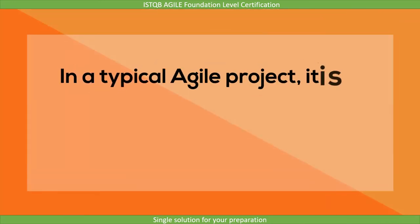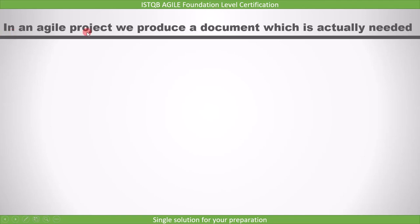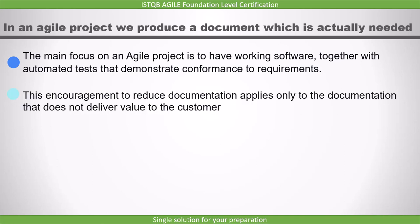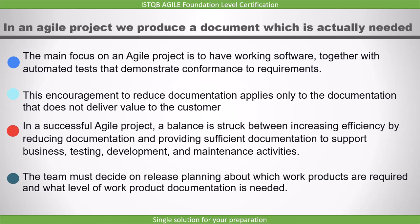Regarding documentation, the most important point is that in a typical agile project, it is common practice to avoid producing vast amounts of documentation. In an agile project, we produce only the documentation that is actually needed. The main focus is to have working software, together with automated tests that demonstrate conformance to requirements. This encouragement to reduce documentation applies only to documentation that does not deliver value to the customer. In a successful agile project, a balance is struck between increasing efficiency by reducing documentation and providing sufficient documentation to support business testing, development, and maintenance activities. The team must decide during release planning which work products are required and what level of documentation is needed.